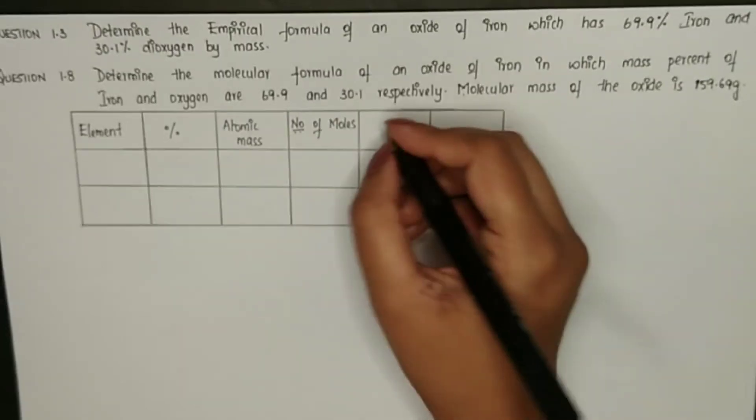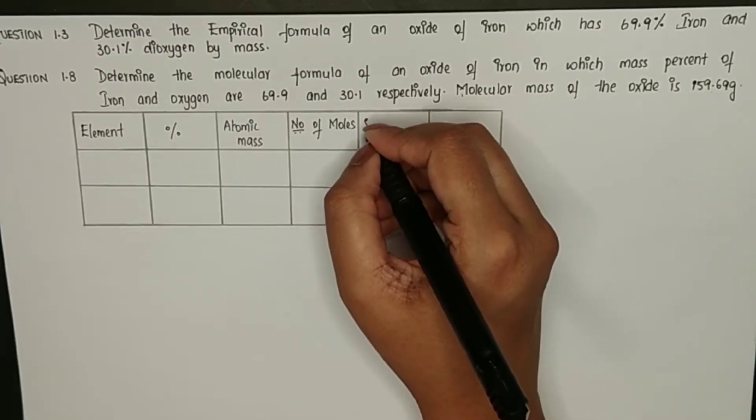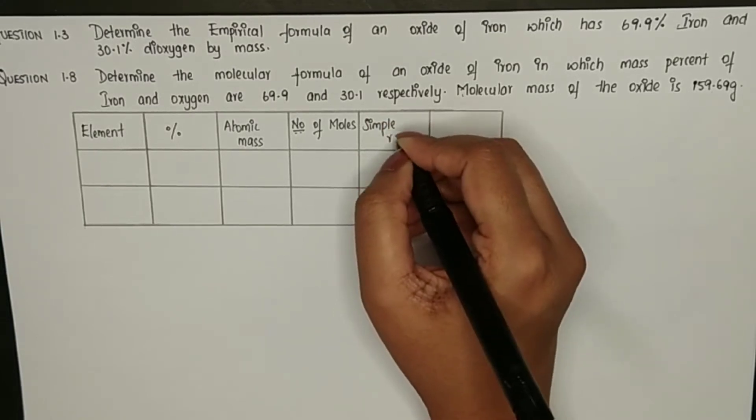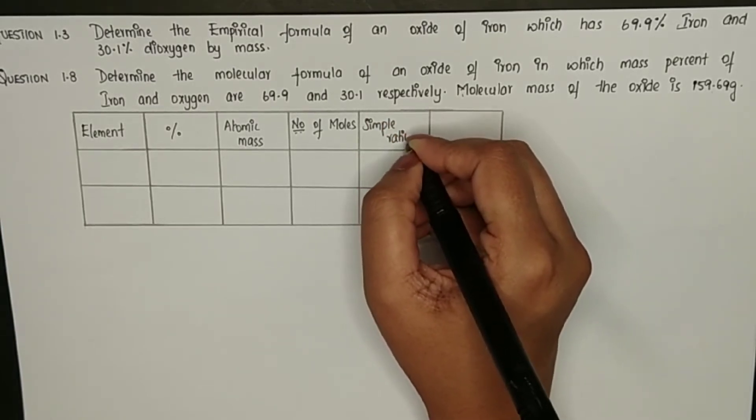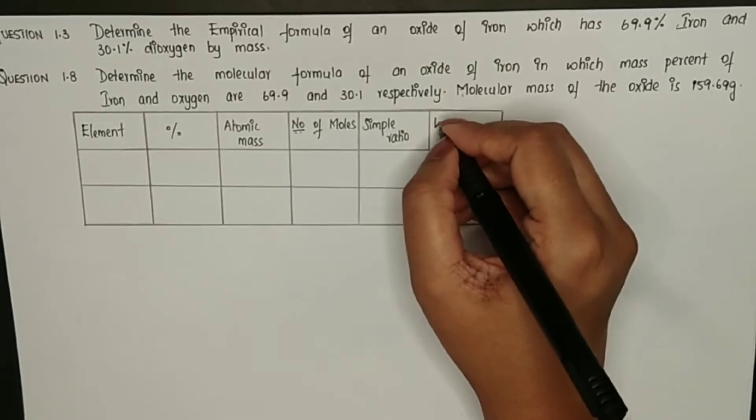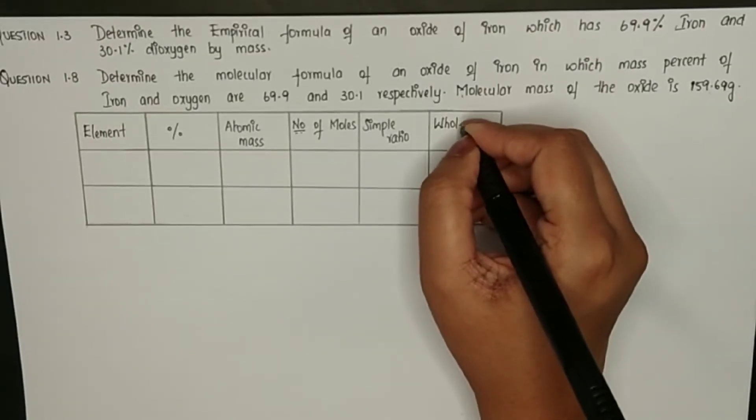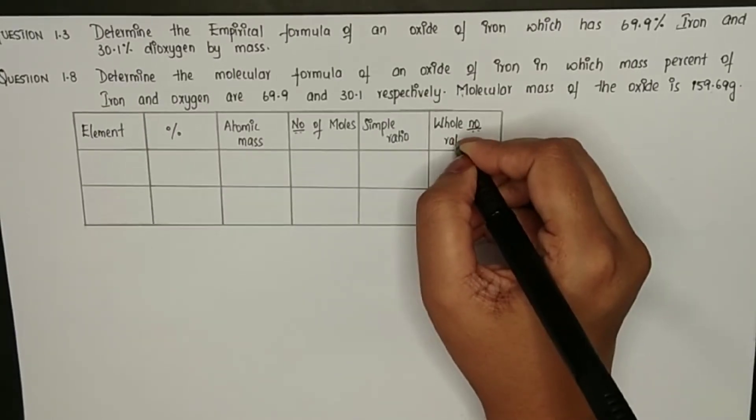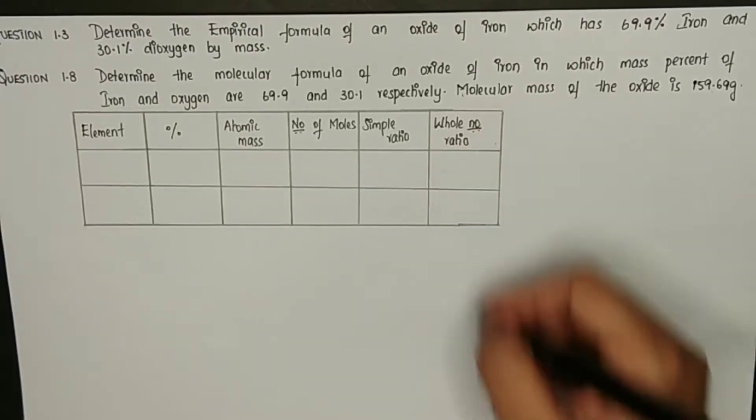Fifth column simple ratio, and the sixth column is whole number ratio. So this table will make our calculation much easier.